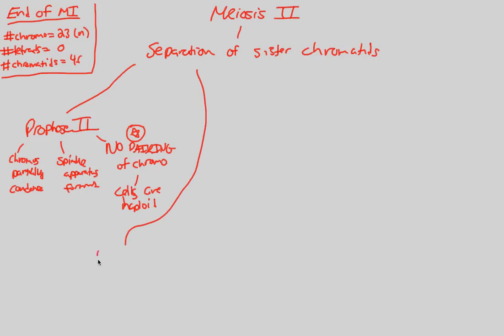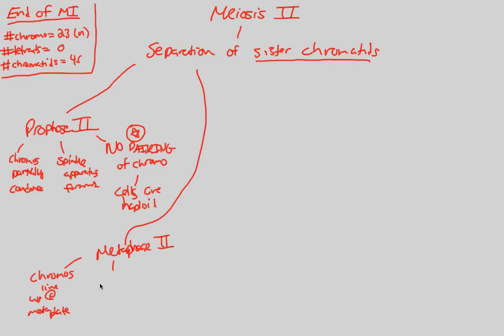In metaphase 2, the chromosomes line up at the metaphase plate. Once they've lined up, instead of homologous chromosomes orienting opposite to each other as in meiosis 1, we now have sister chromatids oriented to opposite poles — because our goal is the separation of sister chromatids.